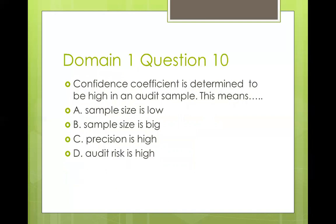Question ten: confidence coefficient is determined to be high in an audit sample. This means: sample size is low, sample size is high, precision is high, or auditor risk is high. If the confidence coefficient is high, then your sample is large. Confidence coefficient is highly proportional to the size of the sample used in audit testing. So the answer is B — sample size is high.